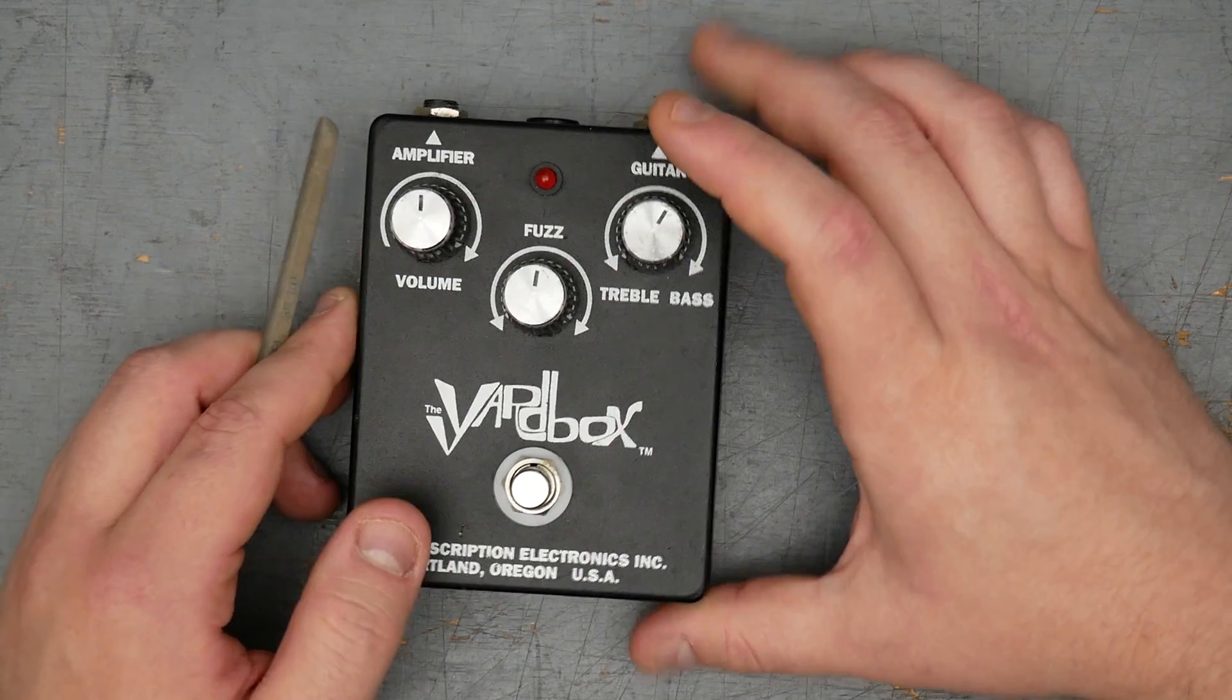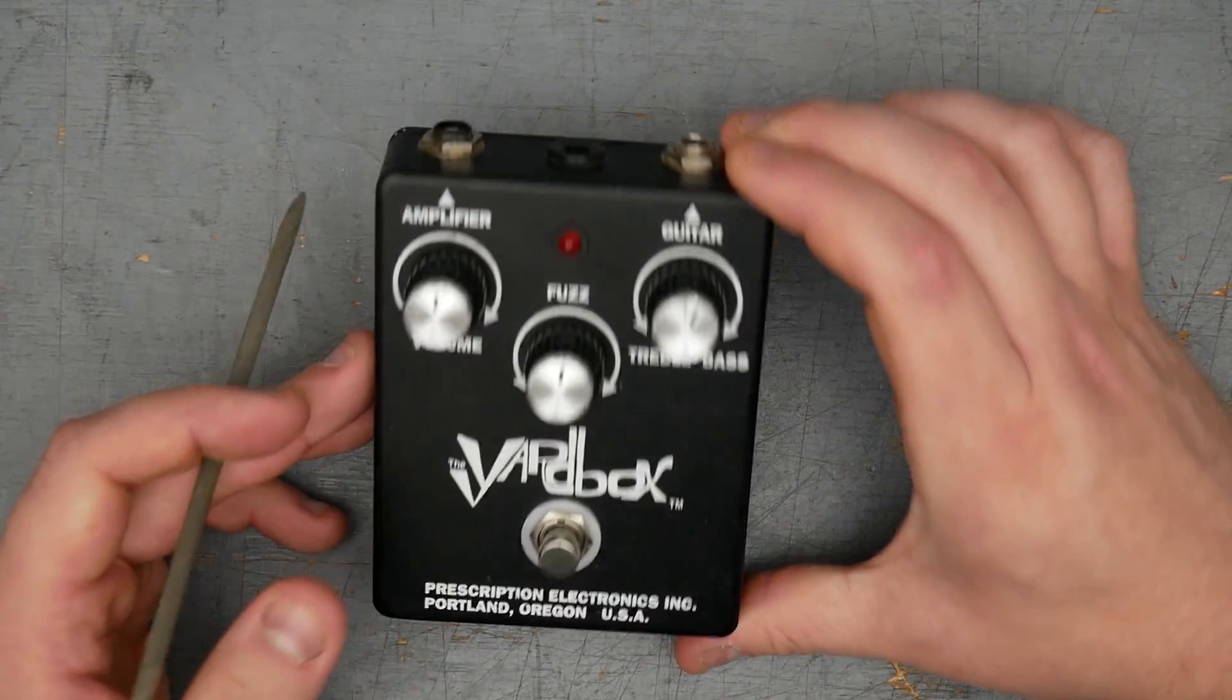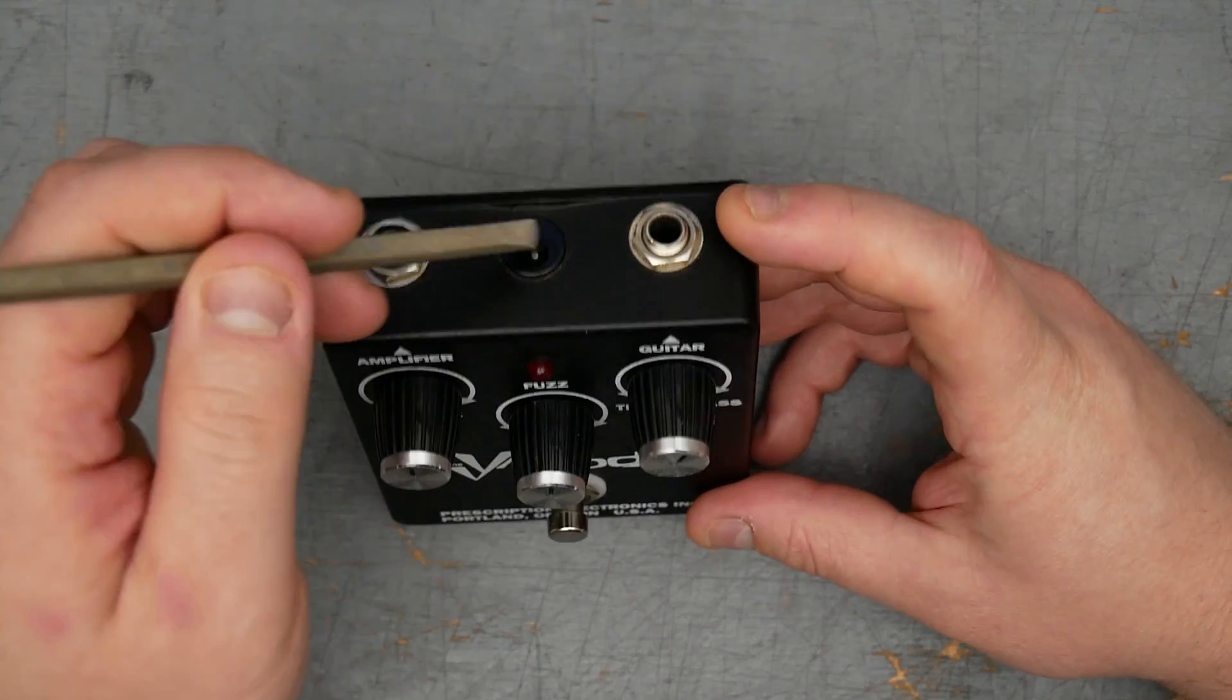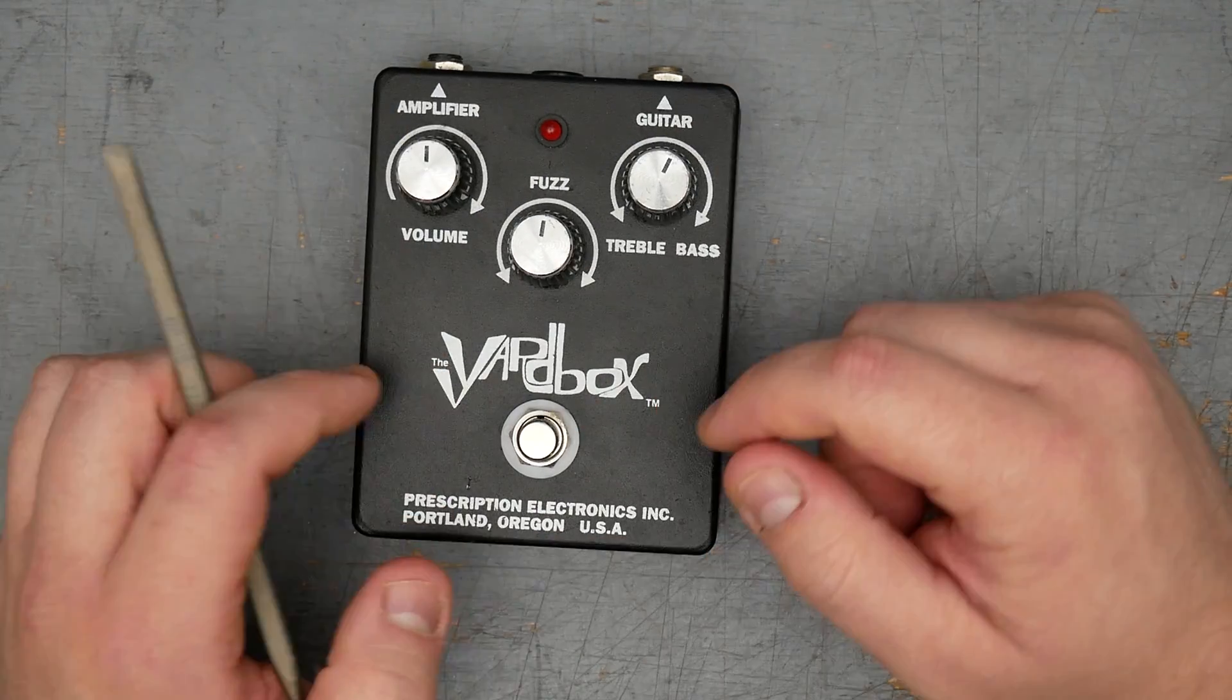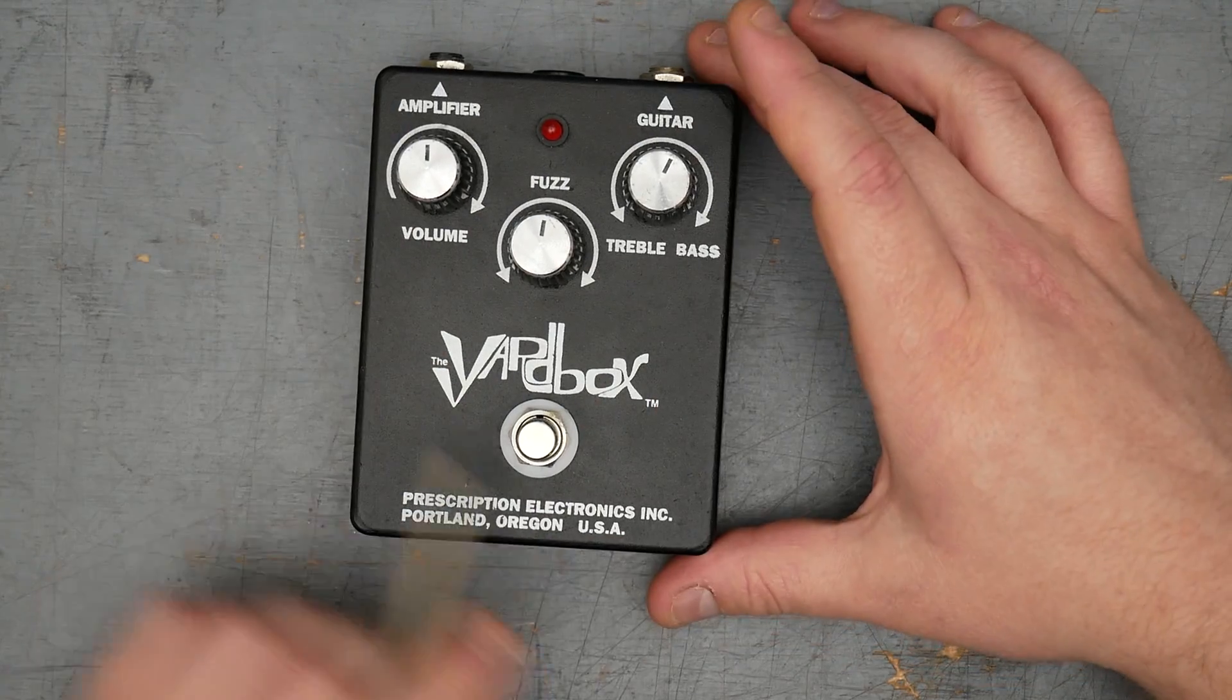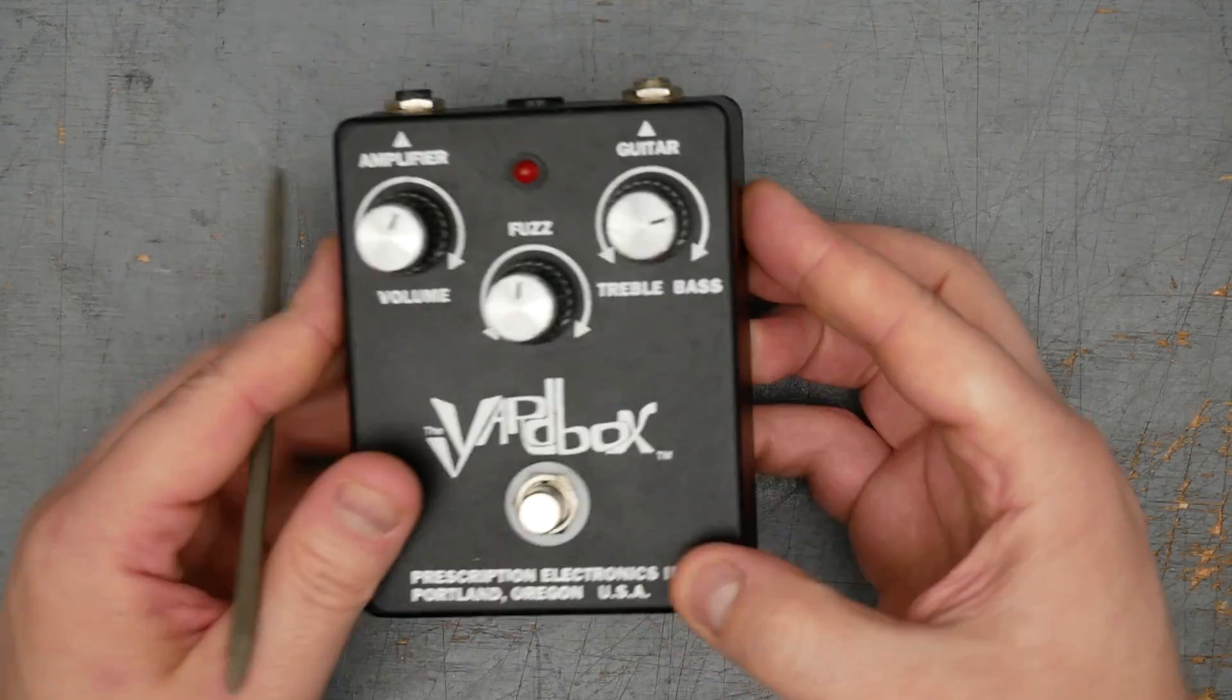I'm not that familiar with Marshall amps, but when I see these knobs, I think Marshall. LED is a five-millimeter red LED. We have top-mounted quarter-inch jacks and the plastic Kobicon-style 2.1-millimeter jack. Yardbox logo styled after the band Yardbirds, and the information from Prescription Electronics. That's pretty much it for the outside.